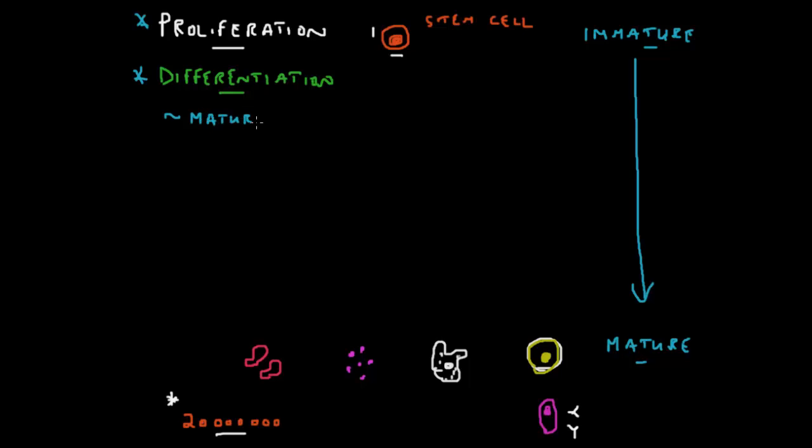And therefore this process of differentiation is also sometimes called, and you can almost consider it a synonym, this process of differentiation is maturation. So the cells have matured from a stem cell that cannot perform the functions of adult cells to a mature cell.